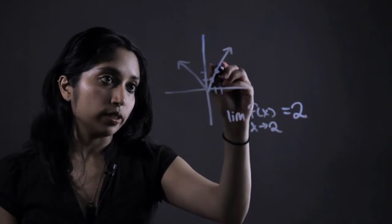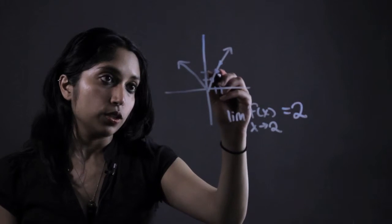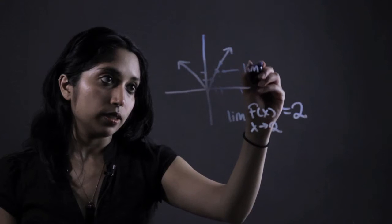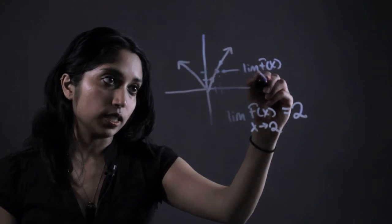And it's approaching it from the left and the right hand side. So you could just label that point as limit of f(x) as x approaches 2.